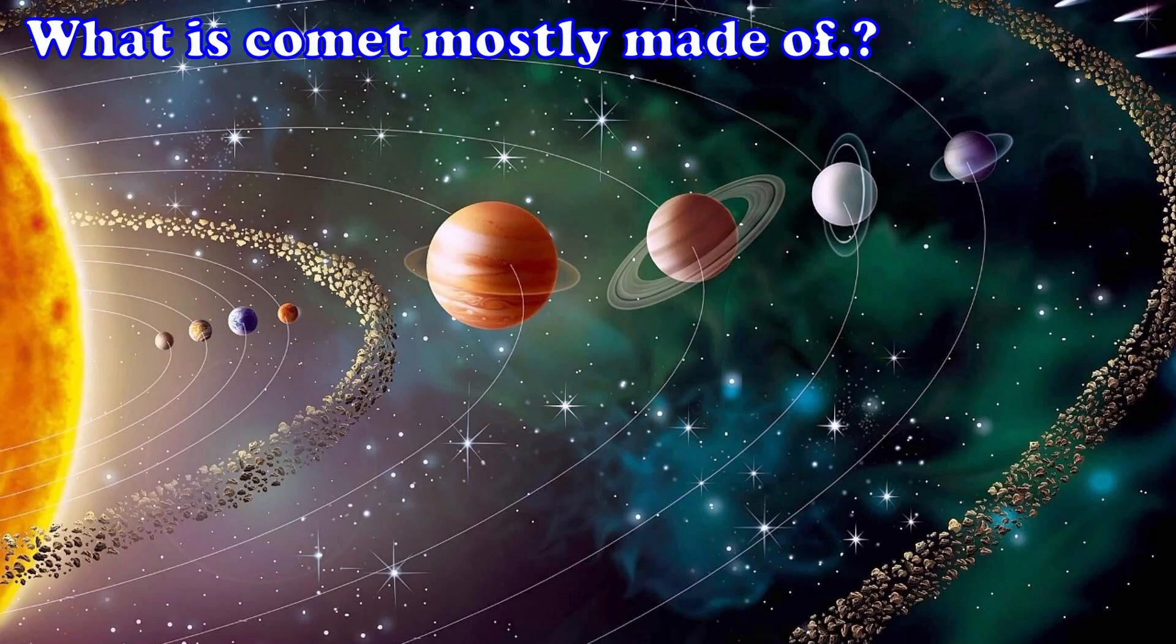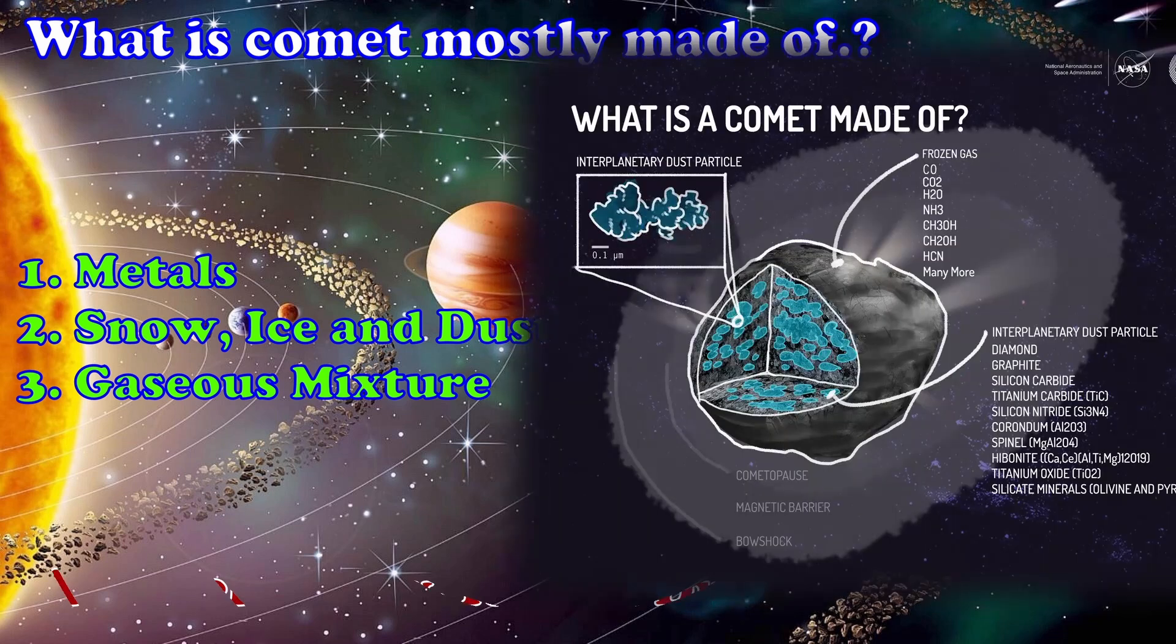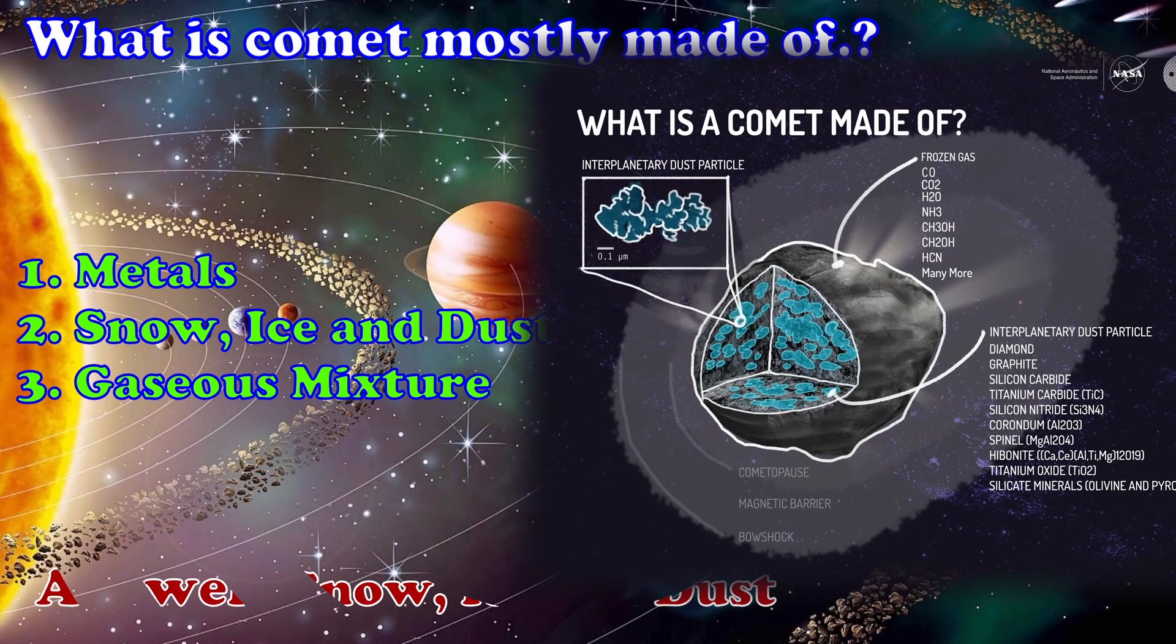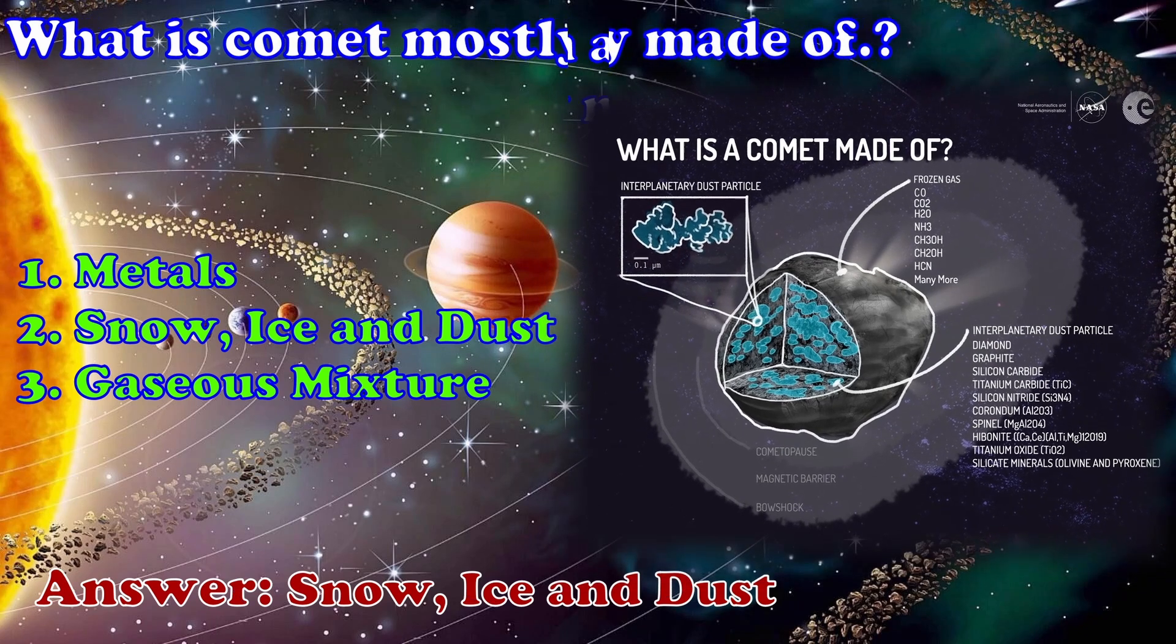What is Comet mostly made of? 1. Metals 2. Snow, Ice and Dust 3. Gaseous Mixture. Answer, Snow, Ice and Dust.